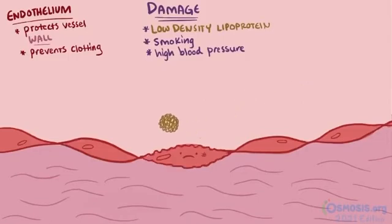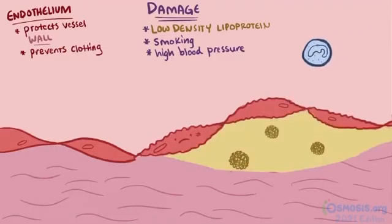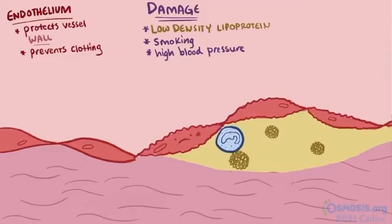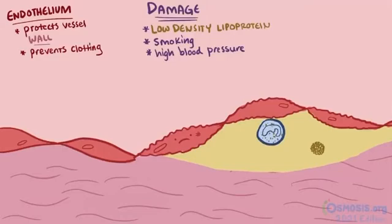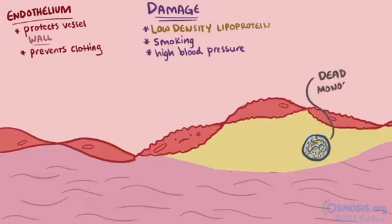The damaged endothelium allows low density lipoproteins to enter the endothelial wall. White blood cells called monocytes follow the low density lipoproteins and break them down through oxidation. You might think that macrophages eating the embedded low density lipoproteins is a good thing, but if there are a lot of low density lipoproteins, the macrophage will eat so much cholesterol that it can die — it basically eats itself to death.